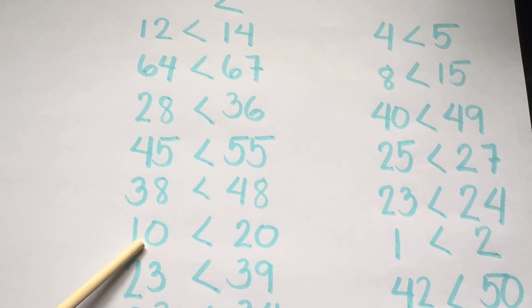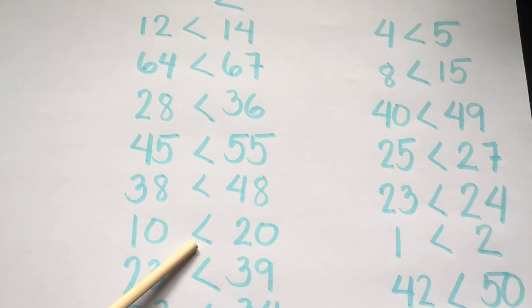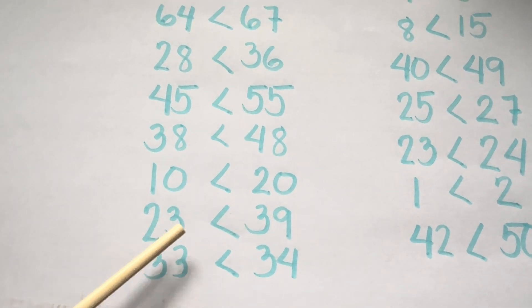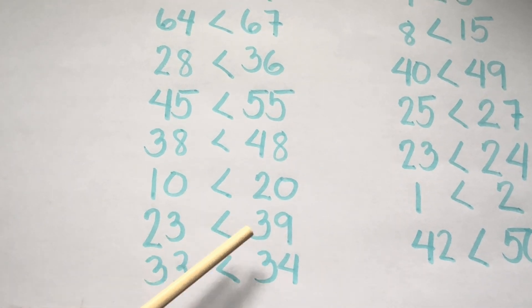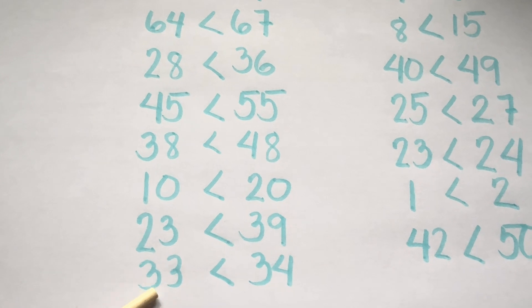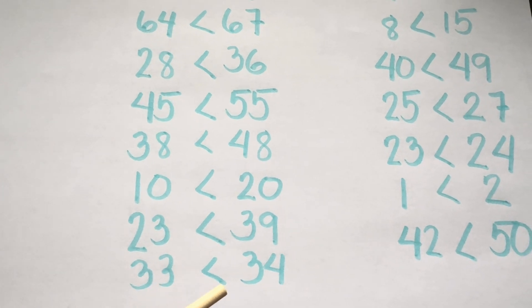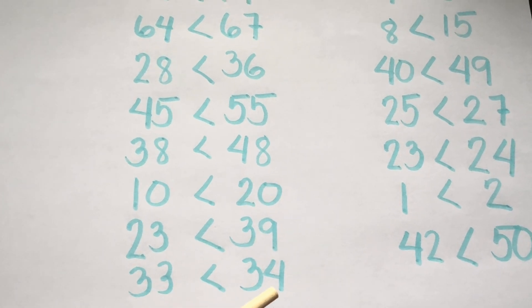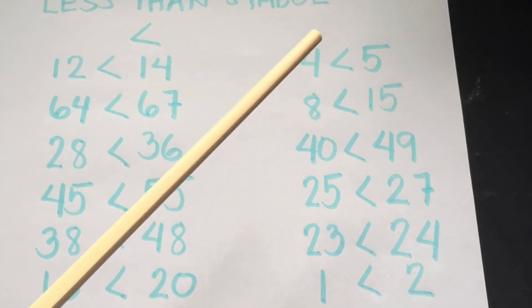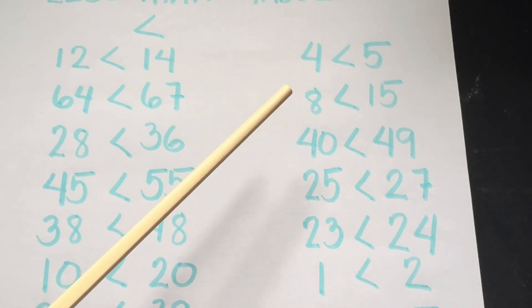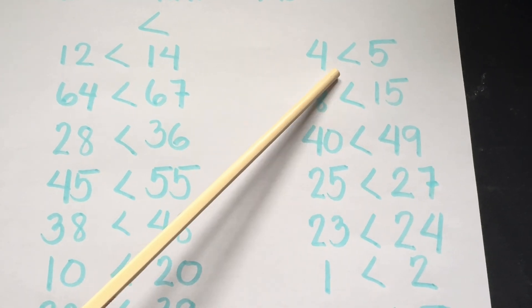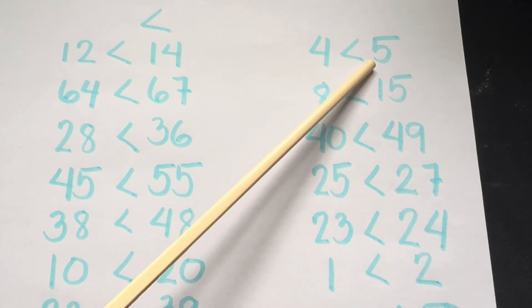Ten is less than twenty. Twenty-three is less than thirty-nine. Thirty-three is less than thirty-four. Four is less than five.